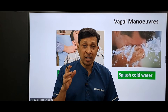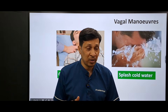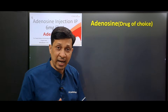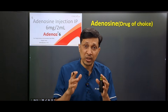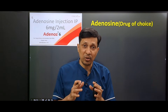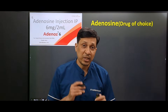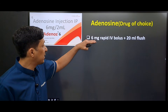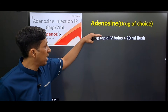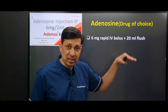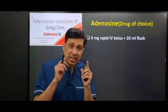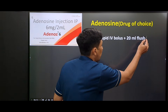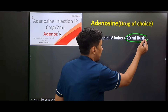If vagal maneuvers are unsuccessful, we go for adenosine, which is the drug of choice in supraventricular tachycardia. The dose is 6 mg rapid IV bolus, and immediately after giving the drug you have to give a 20 ml flush.